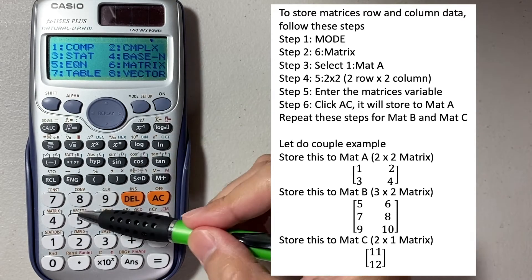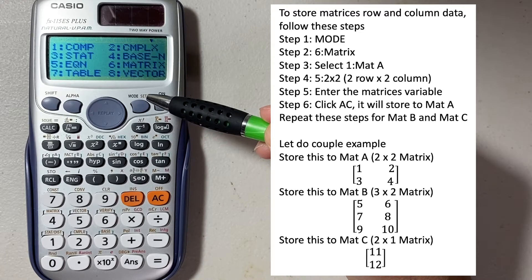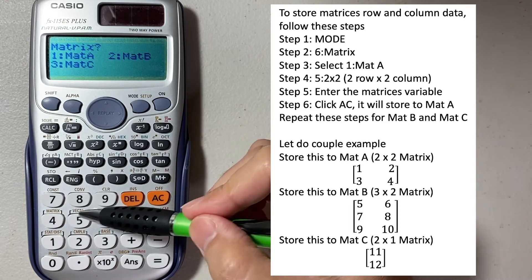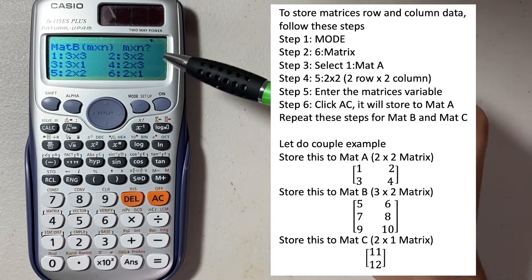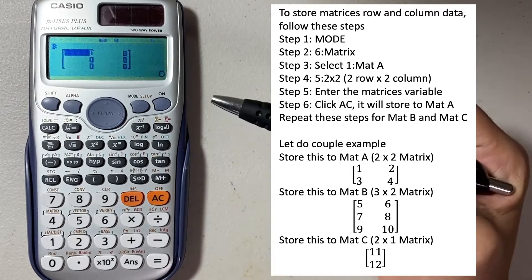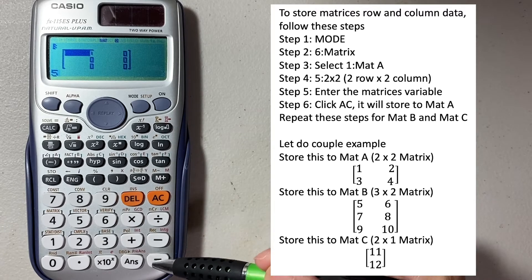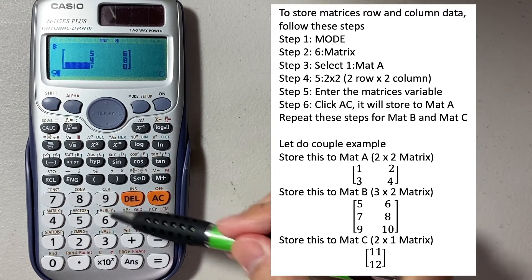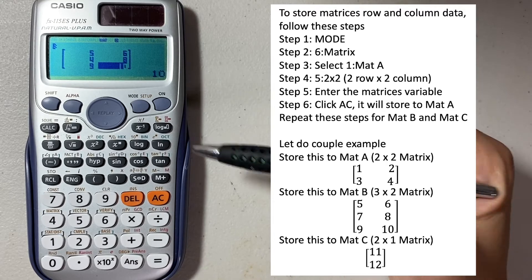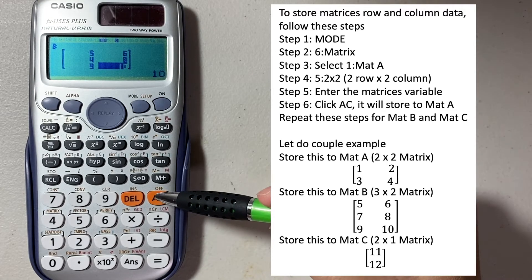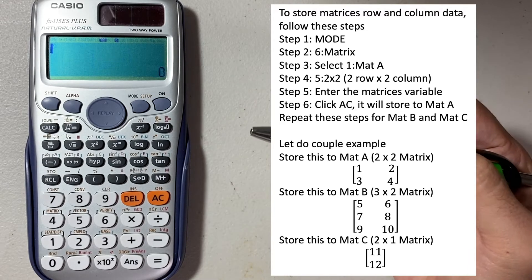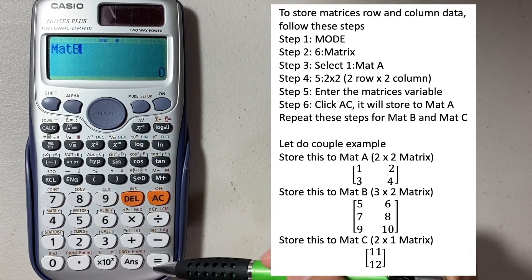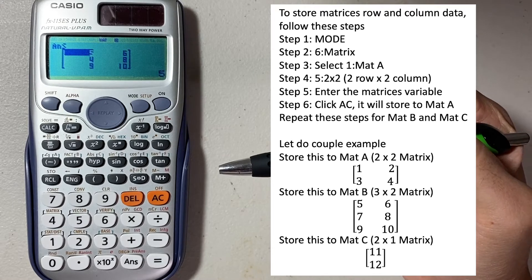Go to mode and then 6. Select matrix B, which is number 2. We're going to have a 3x2, which is number 2. Select that and start entering: 5, 6, 7, 8, 9, 10. Here we store the matrix in the 3x2 — just click AC to store it in matrix B. Now it's stored. If you want to retrieve it, go to shift, matrix B, number 4 — and you see the matrix we just stored.